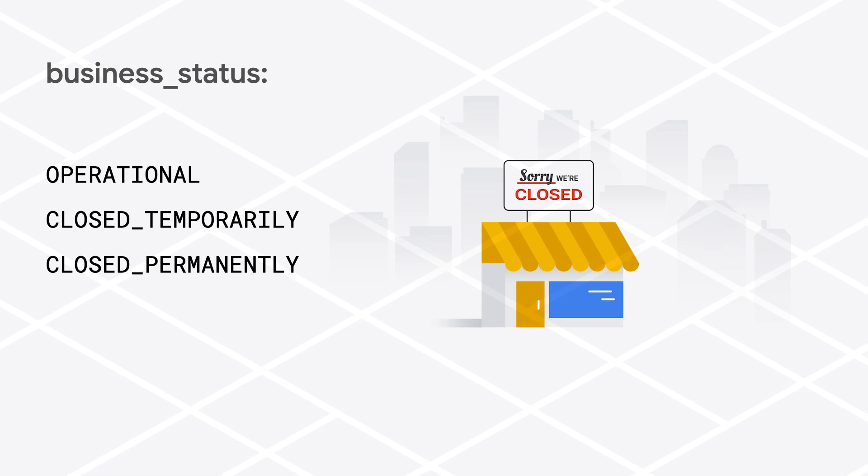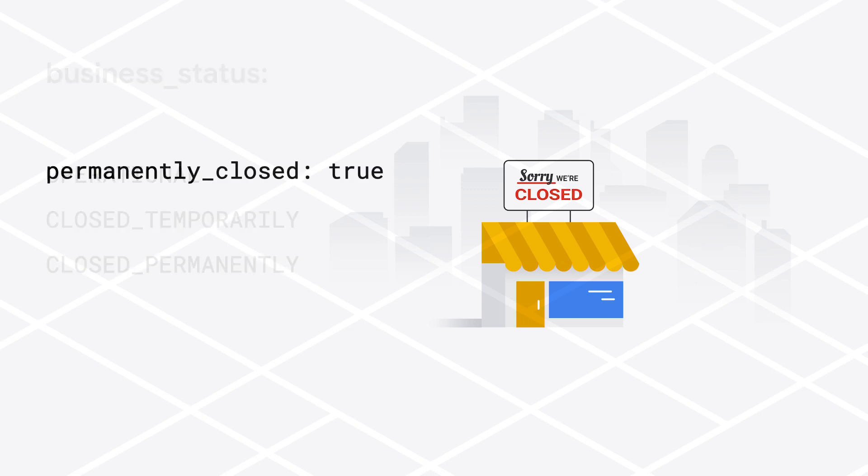You can request the business_status field in place search requests and with place details requests. This field will replace an existing field called permanently_closed.